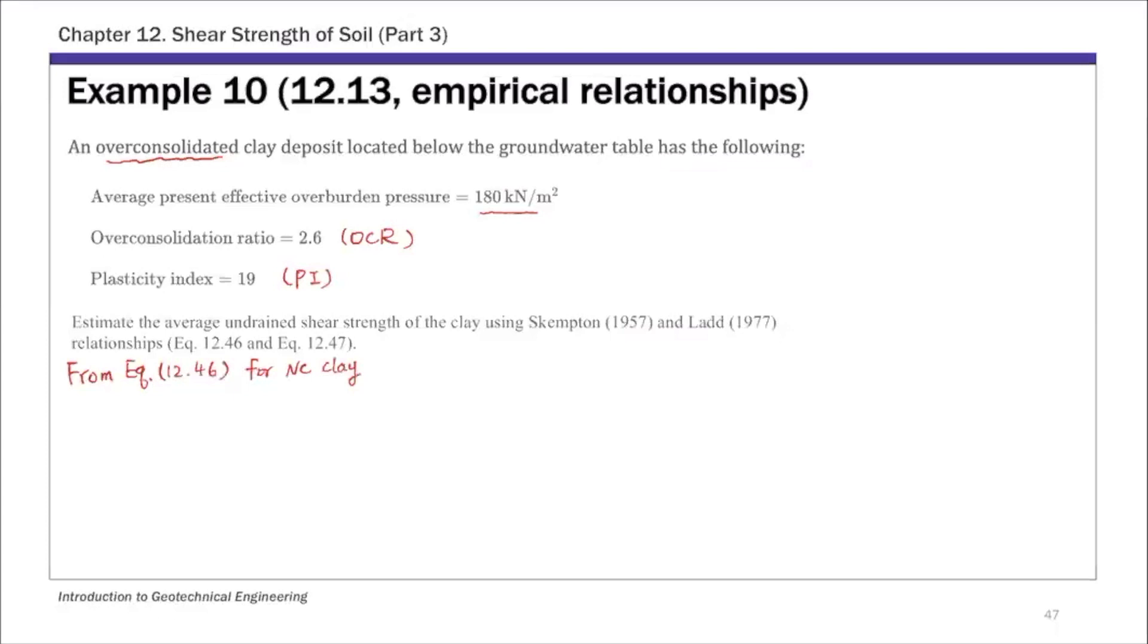So from this Skempton's relation, we have Cu over the overburden pressure sigma nought prime. So this is that 180 number, and this is for NC clay. This is related to the plasticity index PI.